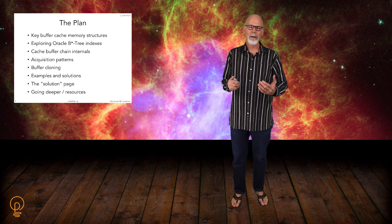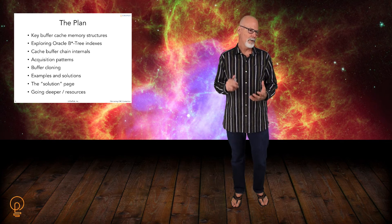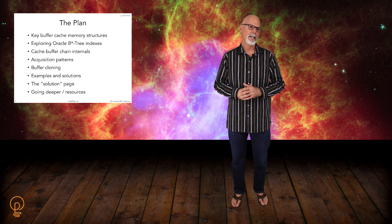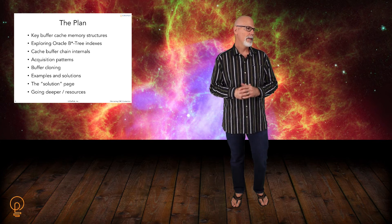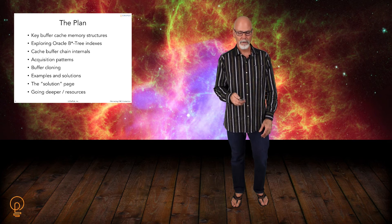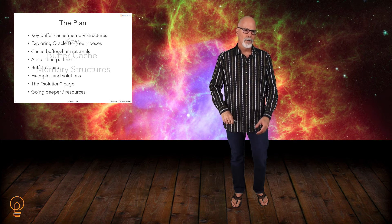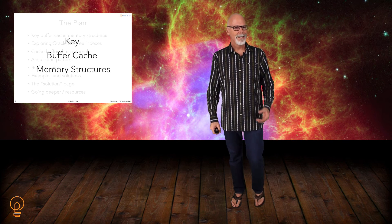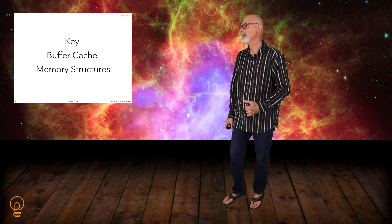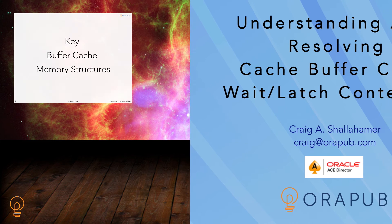Then I'm actually going to have what I call the solution page, which is just a summary of the various solutions related to cache buffer chain latch contention. I have that almost always when I talk about a particular wait event — it's kind of a summary page, a go-to reference page if you see cache buffer chain latch contention. And then I'll give you some pointers to some additional resources so you can continue learning, because the learning never stops. All right — so next, we're going to get into the key buffer cache memory structure, starting with the cache buffer chains.